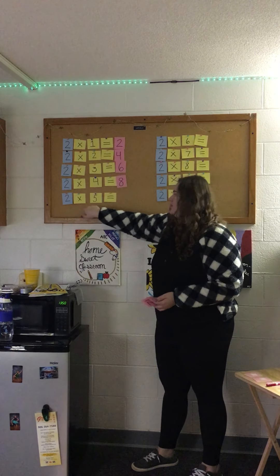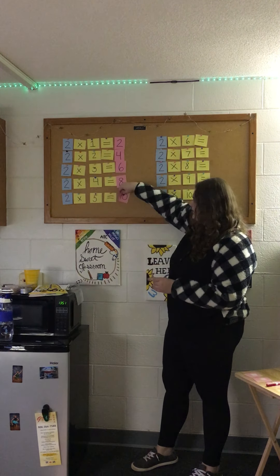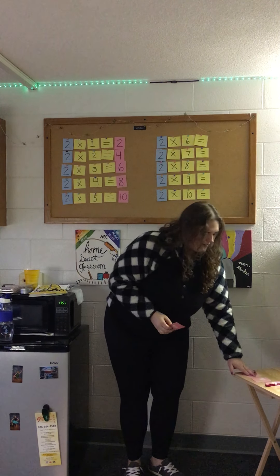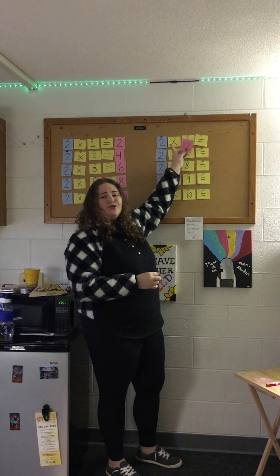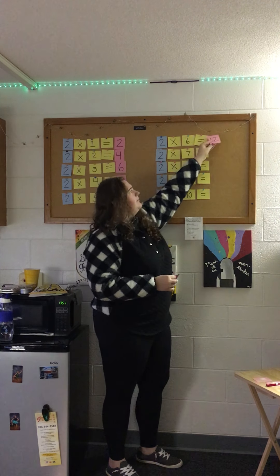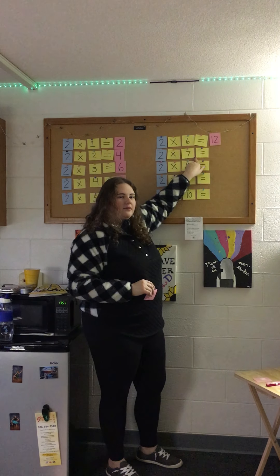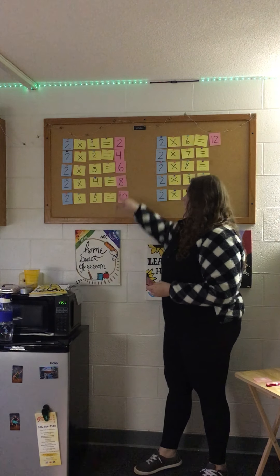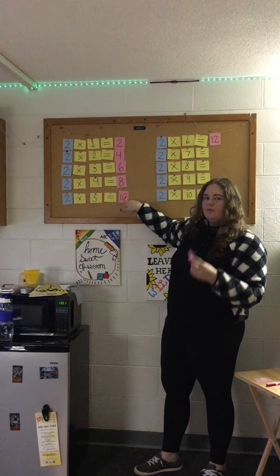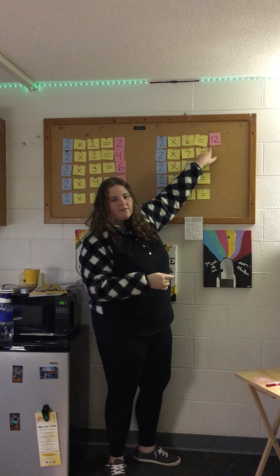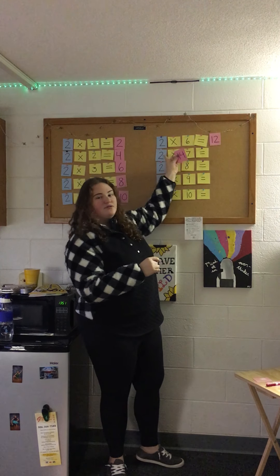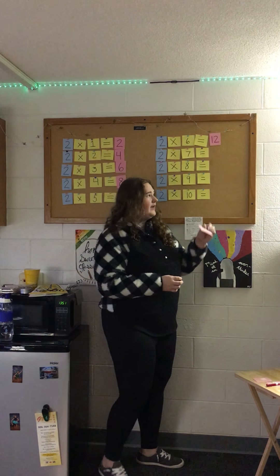Two times five? Sarah? Right — ten. Moving on, we just have a couple more to go. Two times six? Twelve. Two times seven? Elizabeth? So we're just going to work on that same pattern. How did we get from eight to ten? We added two. How about ten to twelve? Added two again. So two times seven — what would we do to twelve to get the next product? We would add two. So twelve plus two equals fourteen.